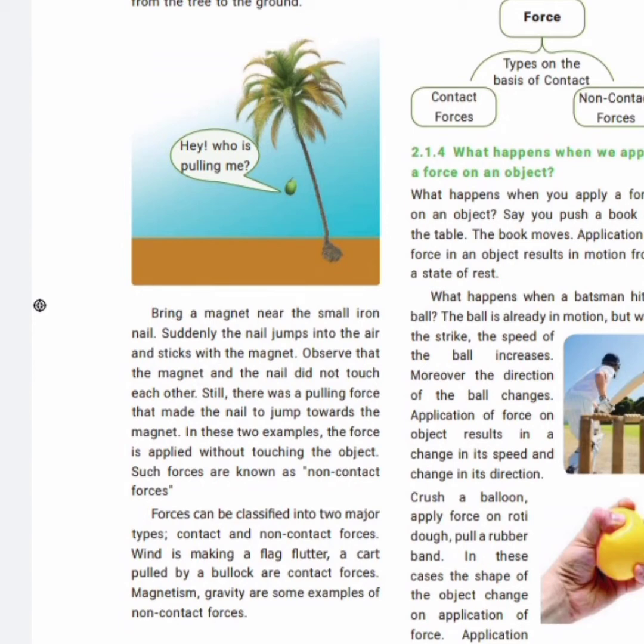Next we will see contact and non-contact forces. Forces can be classified into two major types: contact forces and non-contact forces. For example, a cart pulled by a bullock is a contact force — the two forces have direct contact. When a magnet is brought near a small nail, the nail jumps into the air and sticks to the magnet — that is a non-contact force.